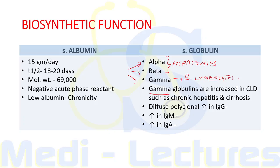There are three types of globulin: alpha, beta, and gamma. Alpha and beta are produced by hepatocytes; gamma globulin is synthesized by B lymphocytes. Gamma globulins are increased in chronic liver disease such as chronic hepatitis and cirrhosis. Diffuse polyclonal elevation of IgG suggests autoimmune hepatitis; elevation of IgM is seen in primary biliary cirrhosis; and elevation of IgA is seen in alcoholic liver disease.